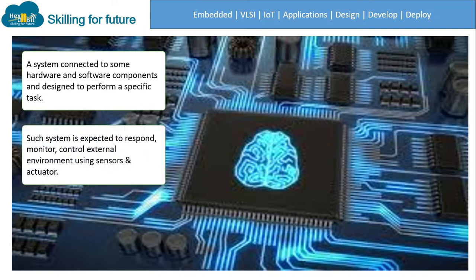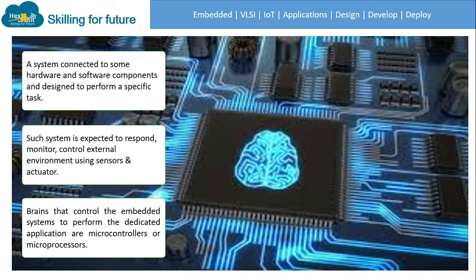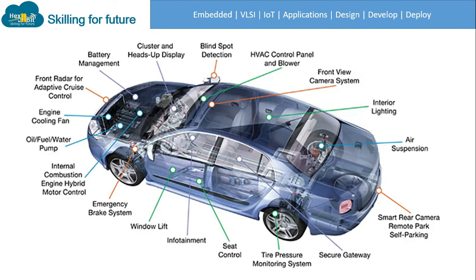Such a system is expected to respond, monitor, and control the external environment using sensors and actuators. The brains that control embedded systems to perform dedicated applications are microcontrollers or microprocessors. You can see the broader picture of an embedded system in the case of an automobile system, where a variety of embedded systems are designed inside a car to perform dedicated tasks.